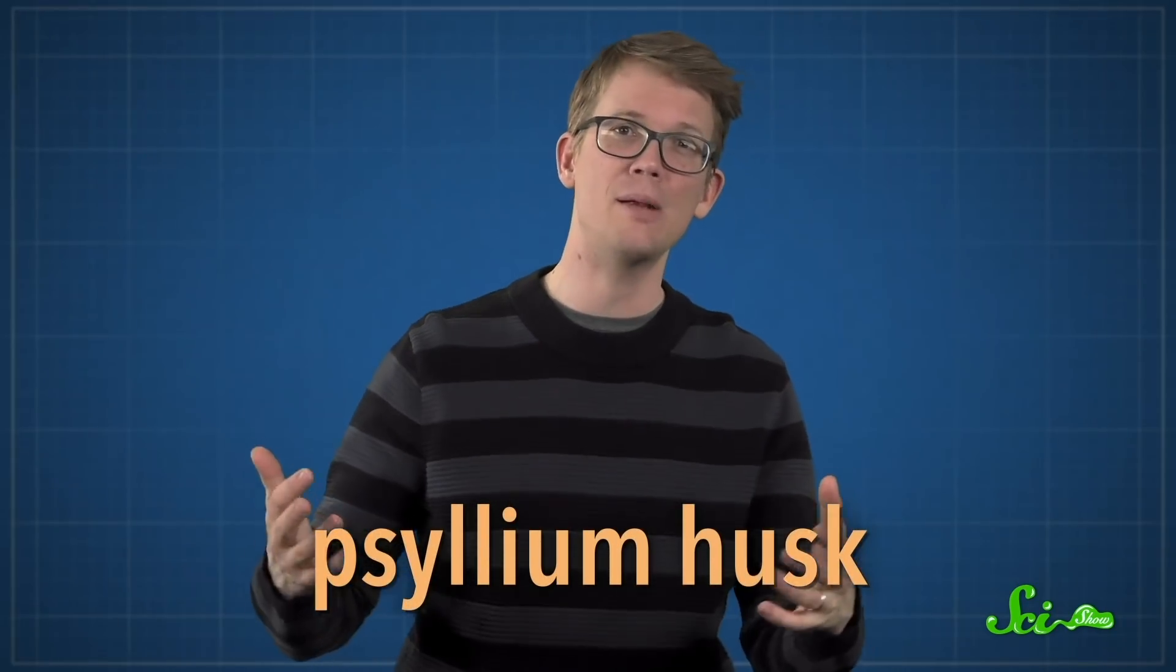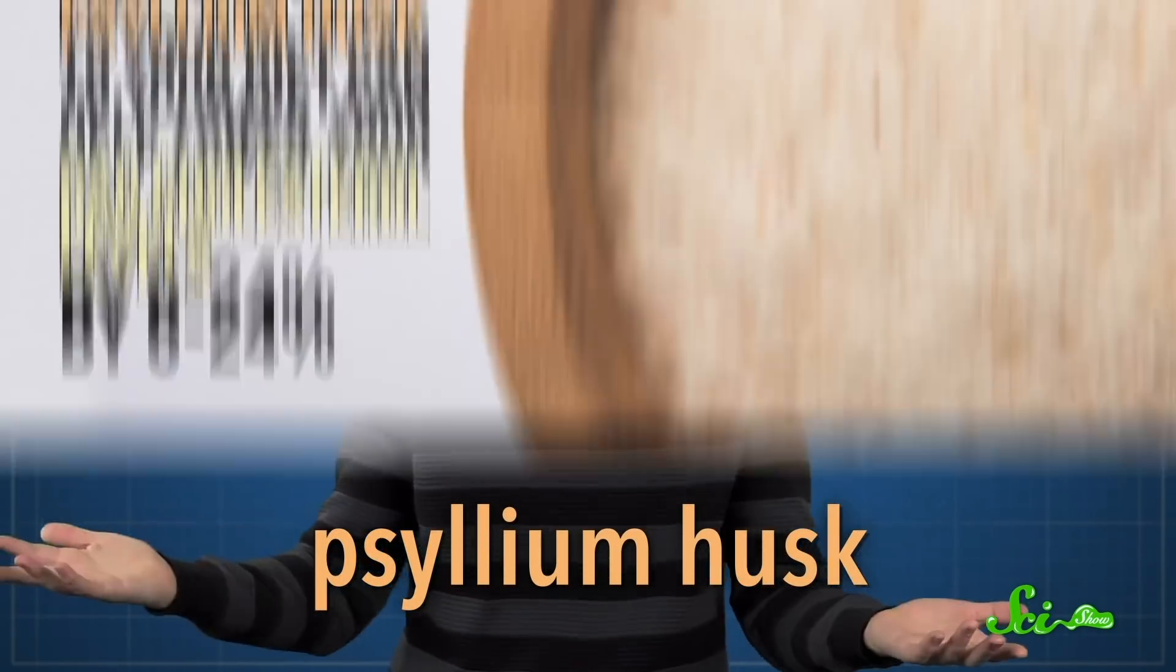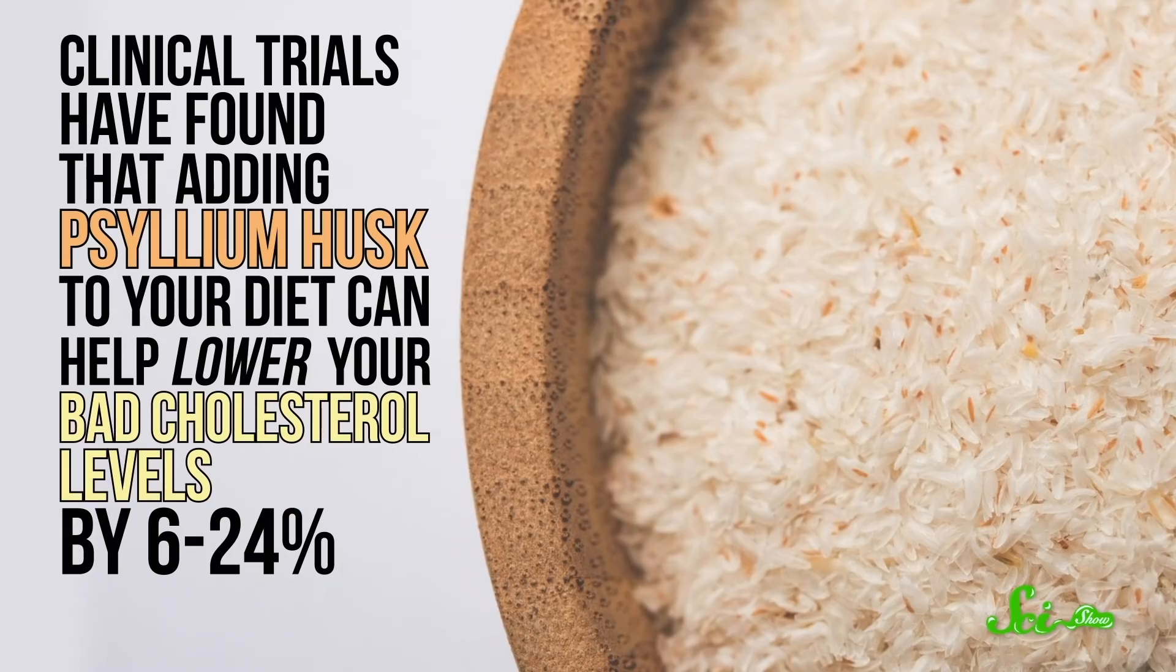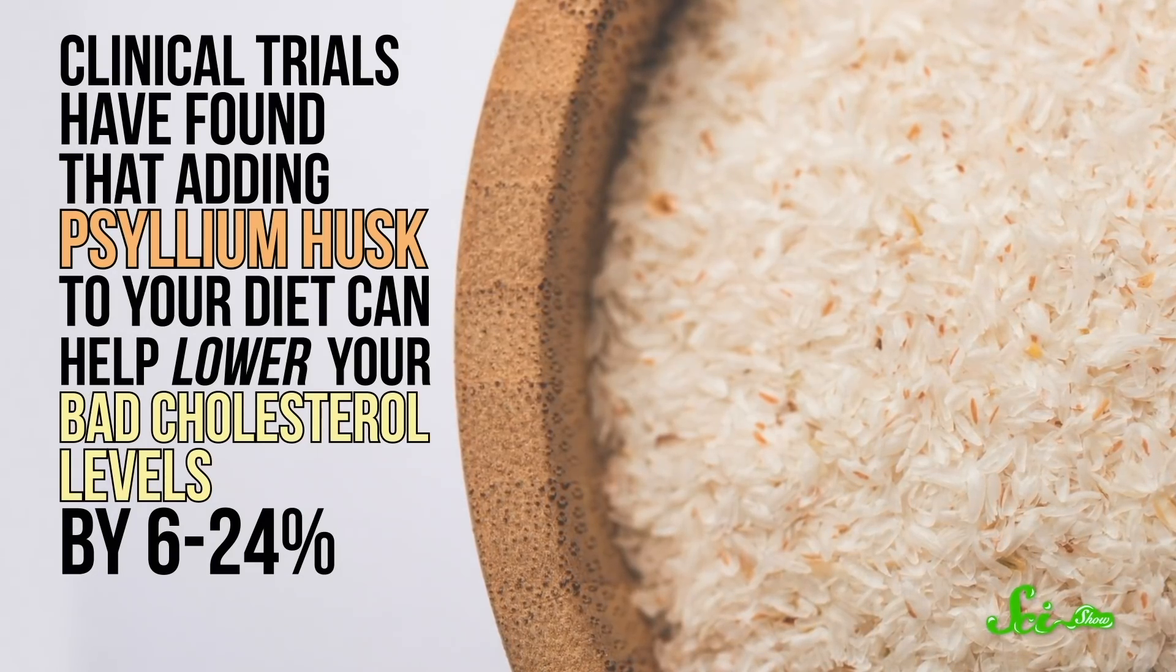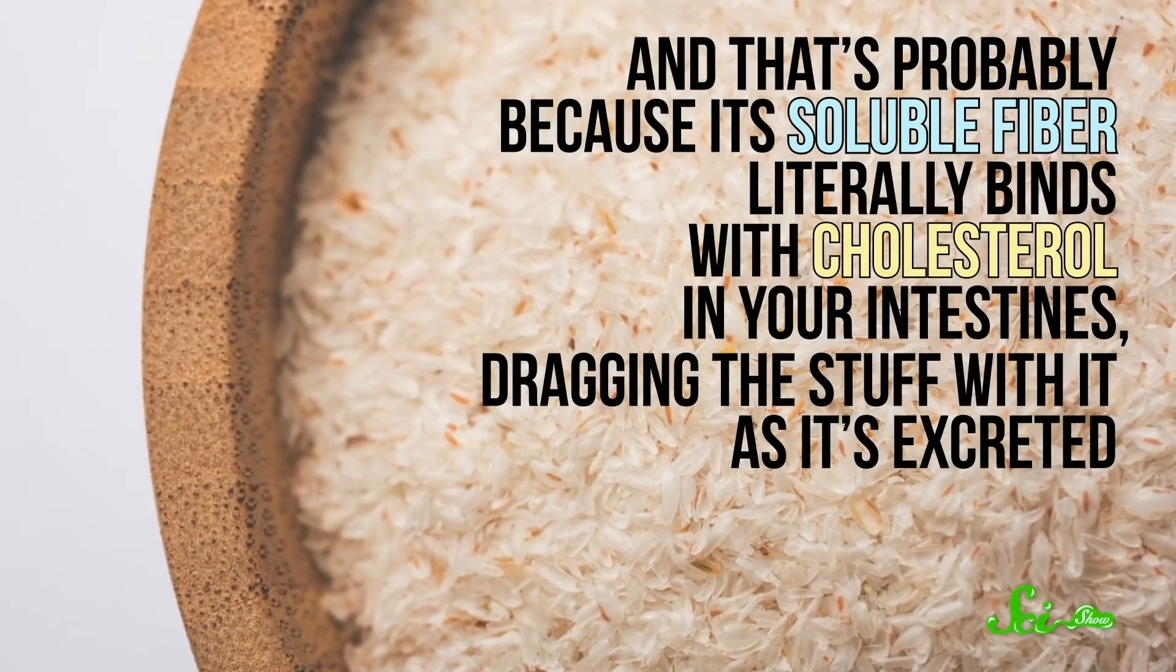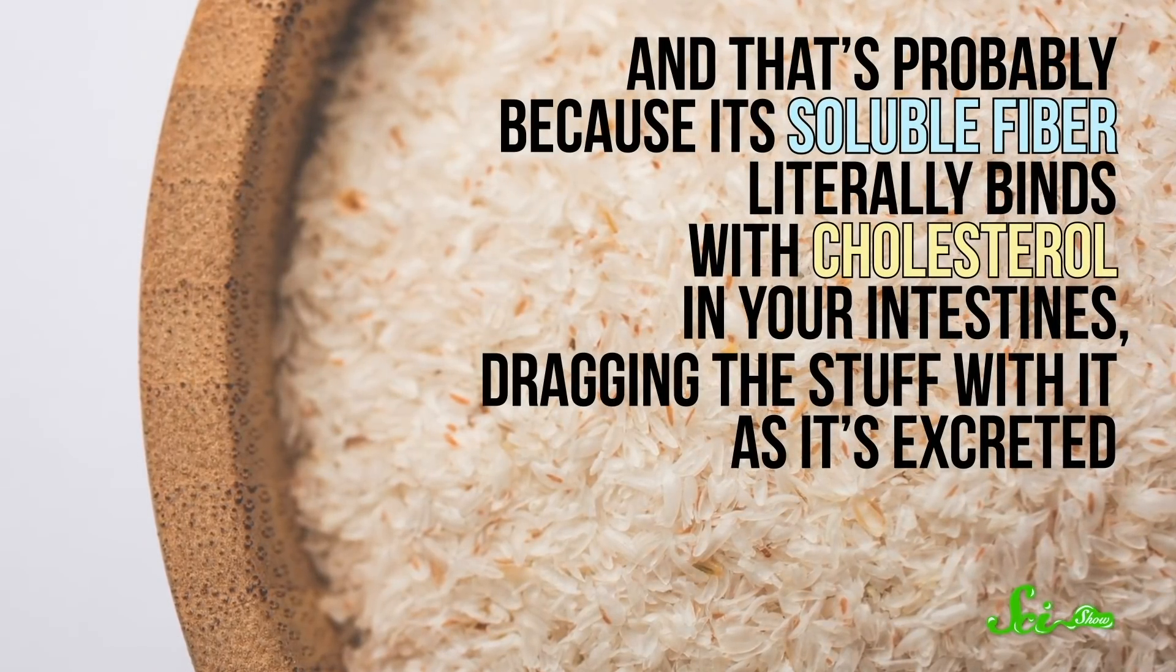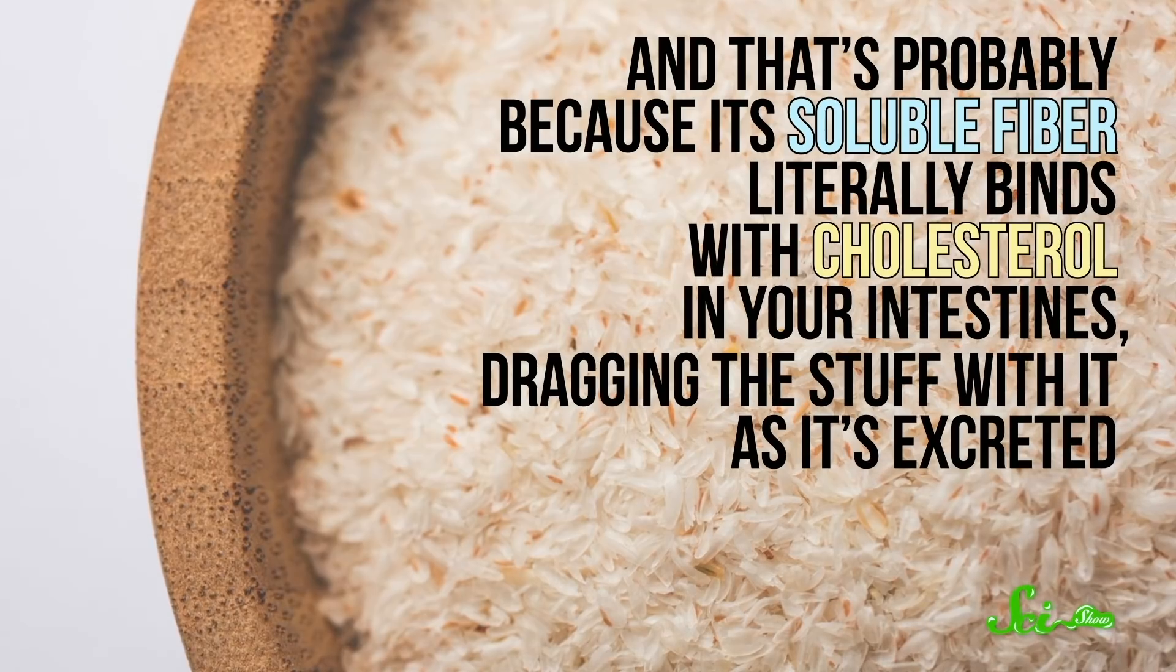One of the most effective viscous soluble fibers seems to be found in psyllium husk, which is made up of the seed coats from a plant. Clinical trials have found that adding psyllium husk to your diet can help lower your bad cholesterol levels by 6 to 24 percent. And that's probably because its soluble fiber literally binds with cholesterol in your intestines, dragging the stuff with it as it's excreted.